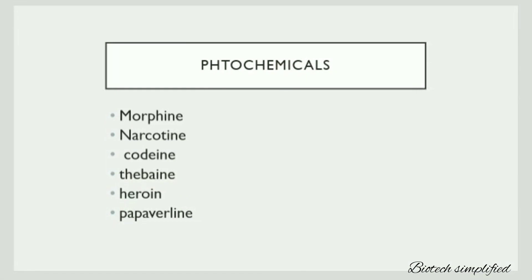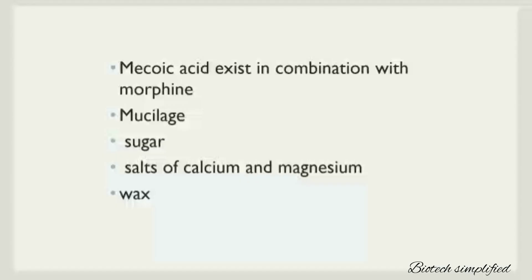Now let us discuss the phytochemicals present in the plant. They are morphine, narcotin, codeine, thebaine, heroin and papaverine. Along with these phytochemicals there are several other components like meconic acid, which is present in combination with morphine, as well as mucilates, sugar, salts of calcium and magnesium, and wax.